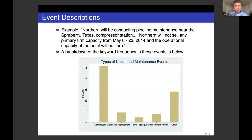One example event description reads: 'Northern will be conducting pipeline maintenance near the Strawberry, Texas compressor station. Northern will not sell any primary firm capacity from May 6 to 23, 2014. The operational capacity of the point will be zero.' The majority of events cite issues at a compressor station. Separately, about 10% mention line replacement, another 5% mention line pigging, roughly 7-8% specify maintenance not related to compressor stations or line work, and roughly 30% don't fall into any of these categories.